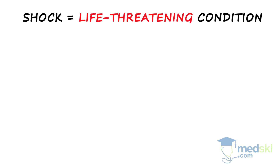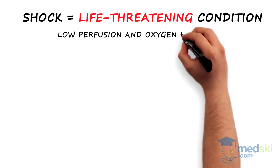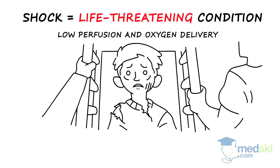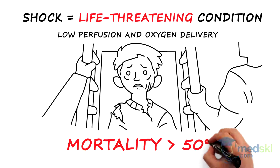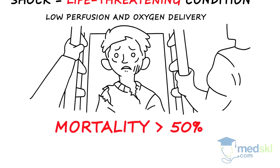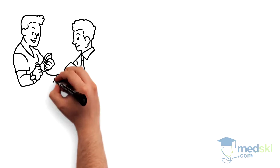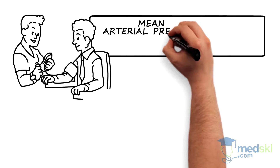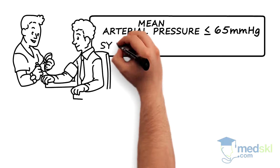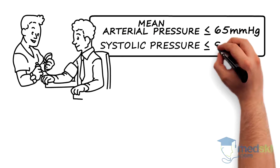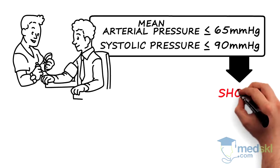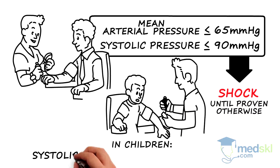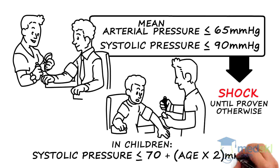Shock is a life-threatening condition characterized by low blood perfusion and oxygen delivery to the cells of the body. Early recognition and appropriate intervention are imperative, as mortality can exceed 50%. If you ever suspect shock, the first thing you should measure is blood pressure. A mean arterial pressure of less than 65 mmHg or a systolic blood pressure of less than 90 mmHg is considered shock until proven otherwise. In children, the cutoff for systolic blood pressure becomes 70 plus twice the age in years.